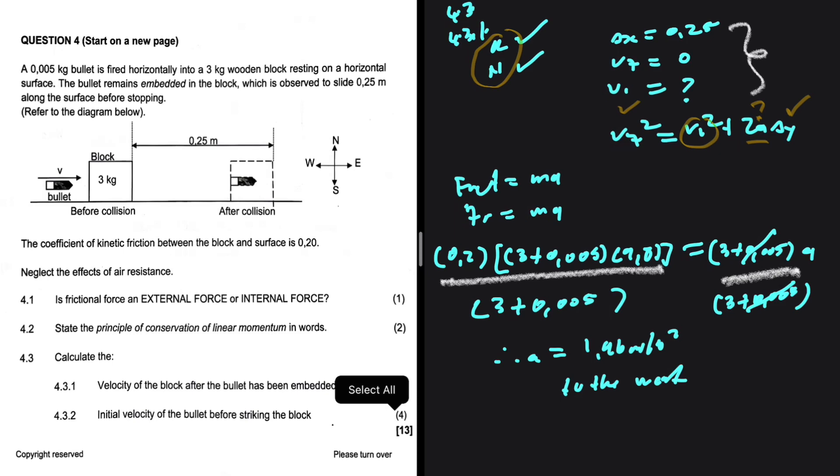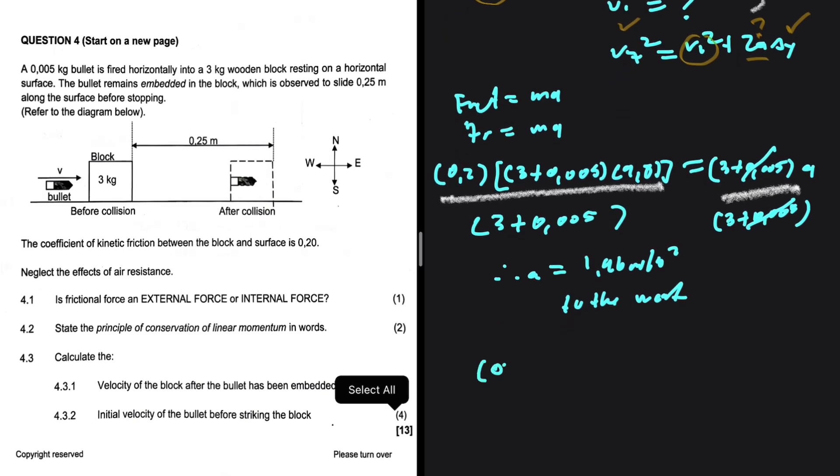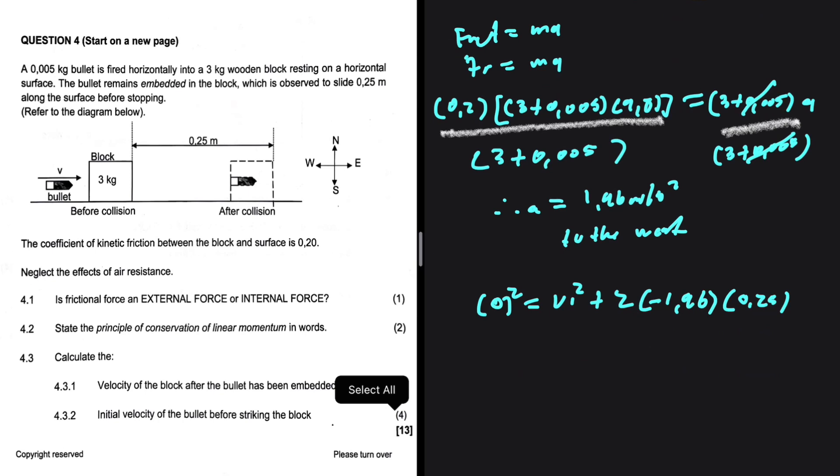Now that we have the acceleration, we can find vi. So we're going to say vf squared: we have 0 squared being equal to vi squared plus 2a. Our acceleration is minus 1.96 multiplied by delta y, which is 0.25, if we take the direction to the east as positive. If we solve this, we're going to get vi squared being equal to 2 multiplied by 1.96 multiplied by 0.25. Now it is just a matter of taking square roots on both sides. If we do that, we're going to get 0.99 meters per second to the east as our initial velocity of the bullet block system.